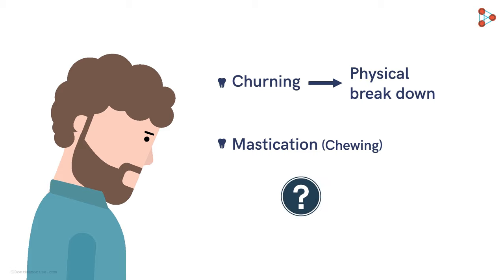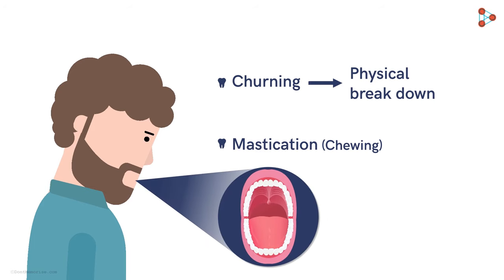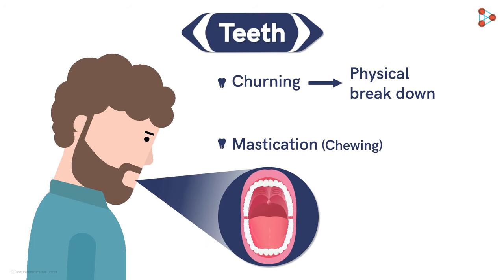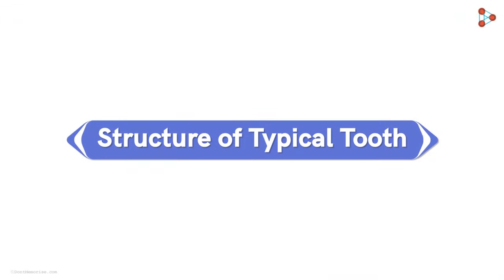And who helps in this process? The sole components of the buccal cavity involved in mastication are the teeth. They help in biting, chewing and grinding the food we eat. Let's have a look at the teeth in detail in this video.